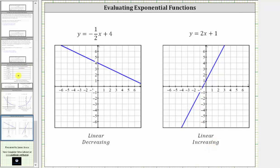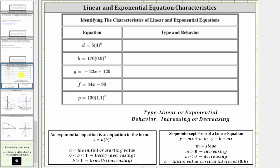The first equation is d equals five times four raised to the power of y. Because the input variable y is in the position of the exponent, this is an exponential equation. And because the base b is four, which is greater than one, the behavior is increasing. Next we have h equals 170 times 0.9 raised to the power of x. Because the input variable x is in the position of the exponent, this is an exponential equation. But the base b is between zero and one, which means we have exponential decay, and the behavior is decreasing.